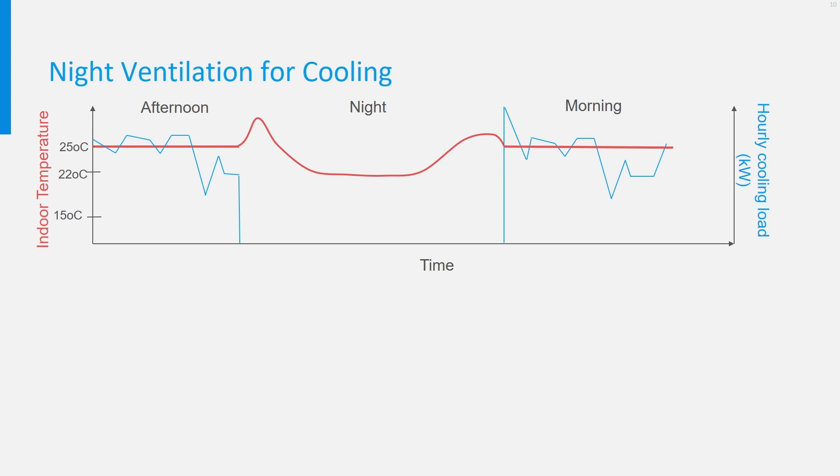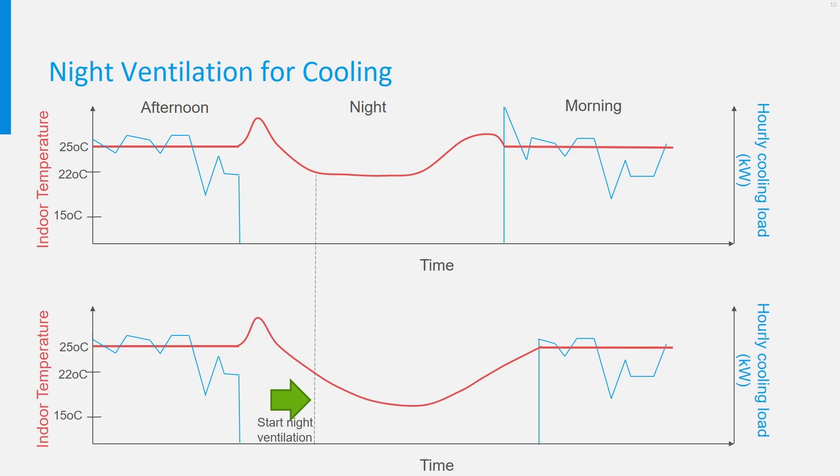Just like we did for heating, you could start the cooling earlier to limit the peak load. Even smarter is to ventilate the building during the night with large quantities of colder outdoor air. This way, the temperature in the morning is much lower.